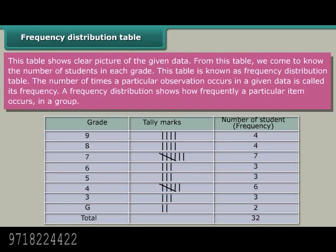This table is known as frequency distribution table. The number of times a particular observation occurs in a given data is called its frequency. A frequency distribution shows how frequently a particular item occurs in a group.